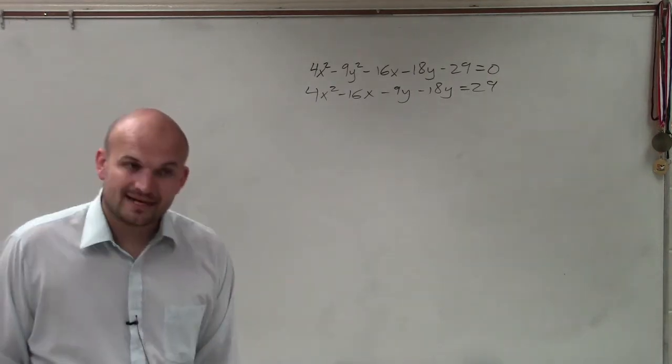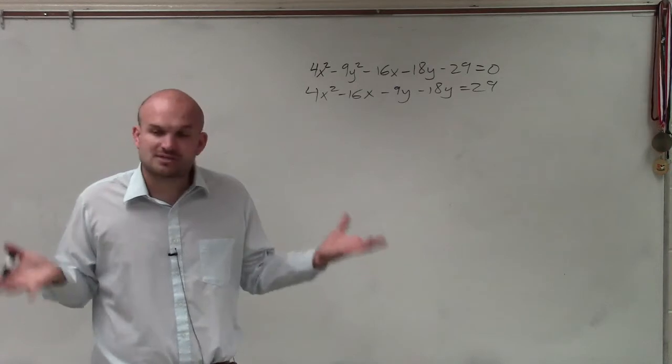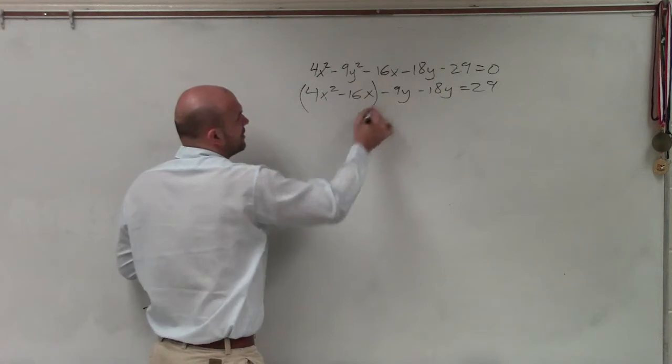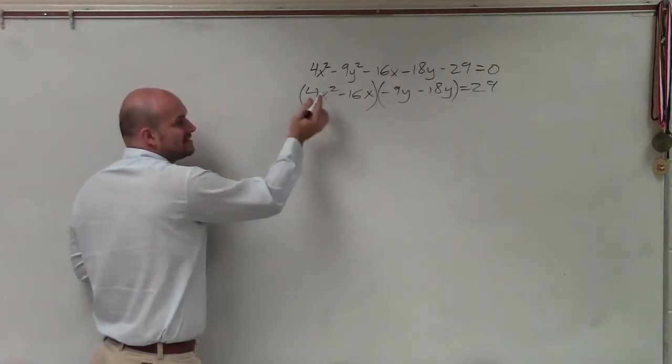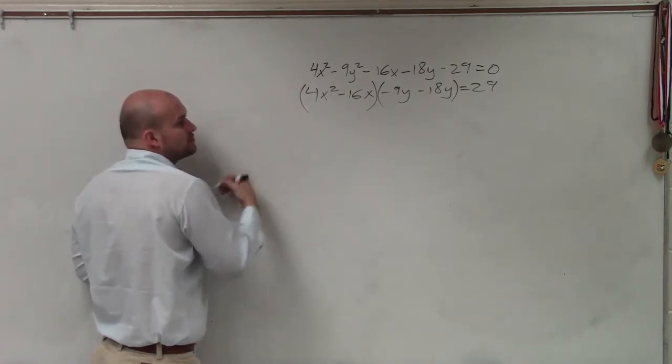So now the next thing I need to do is complete the square. I need to create two square trinomials that I can rewrite as binomial squared. So I need to complete the square. Before I can go ahead and do that, I need to make sure I factor out my constants in front to make sure my x squareds are equal, or my coefficient of x squared equals 1.